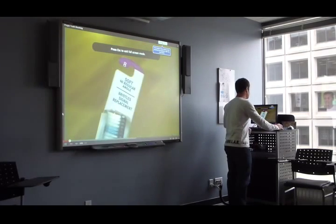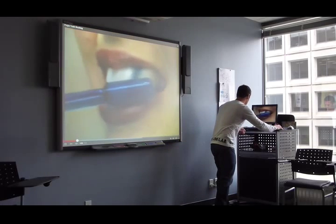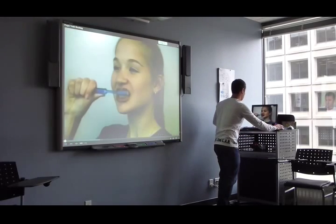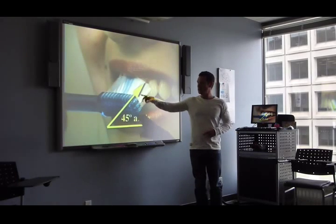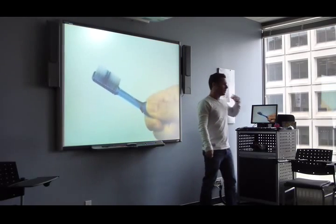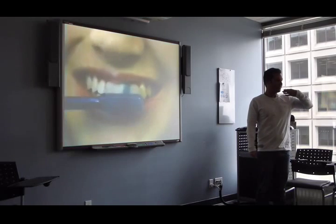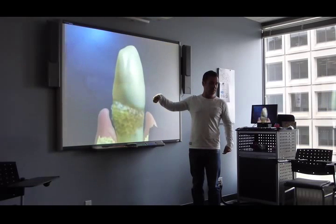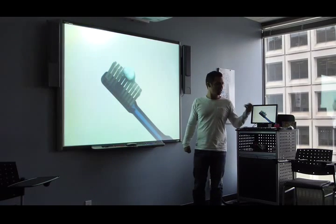First of all, take a soft toothbrush. To avoid injury to your gum, always take a soft one. The angle you put your brush is 45 degrees, and you start with a rotation movement.